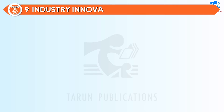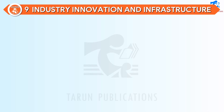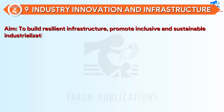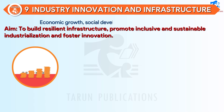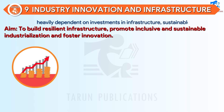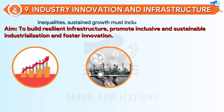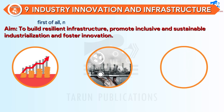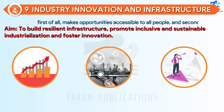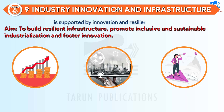SDG 9: Industry, Innovation and Infrastructure. Aim: to build resilient infrastructure, promote inclusive and sustainable industrialization, and foster innovation. Economic growth, social development, and climate action are heavily dependent on investments in infrastructure, sustainable industrial development, and technological progress. In the face of a rapidly changing global economic landscape and increasing inequalities, sustained growth must include industrialization that first makes opportunities accessible to all people, and second, is supported by innovation and resilient infrastructure.